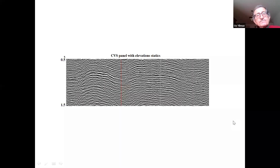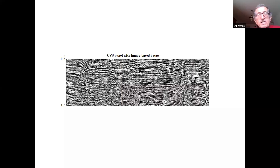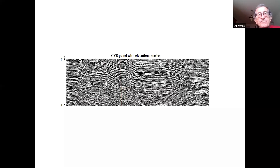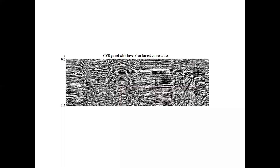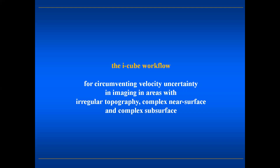Here's the CVS panel with elevation statics, and here's the CVS panel with the image-based iSTATS solution — you can see that we have corrected for all those travel time distortions. The tomostatics result shows some undercorrected zone near one region because travel time tomography couldn't handle the velocity within the near surface. So let's move down to the second workflow — the subsurface. This is a workflow for circumventing velocity uncertainty in imaging in areas with irregular topography, complex near surface, and complex subsurface.